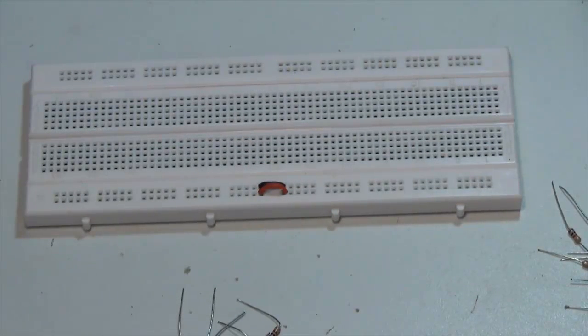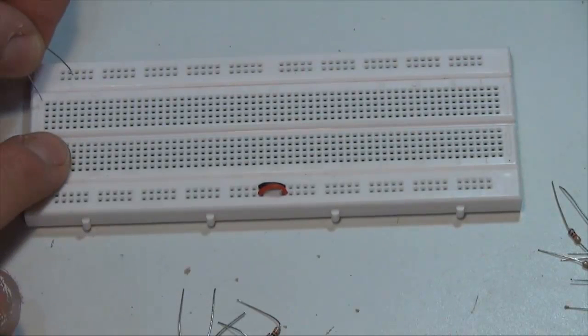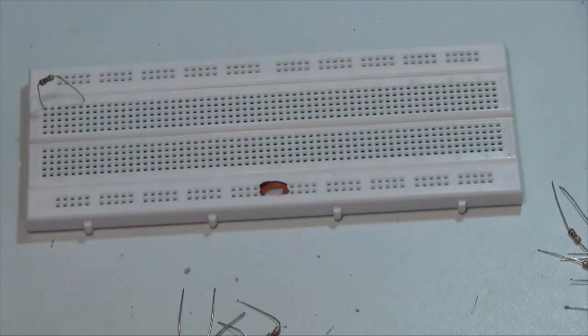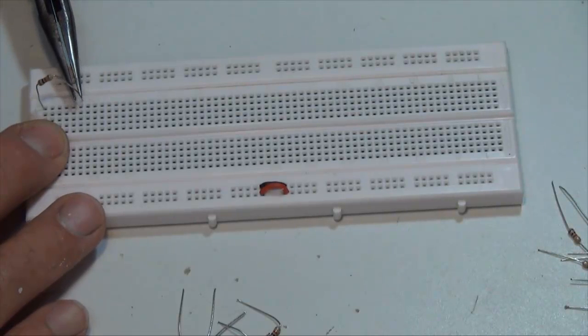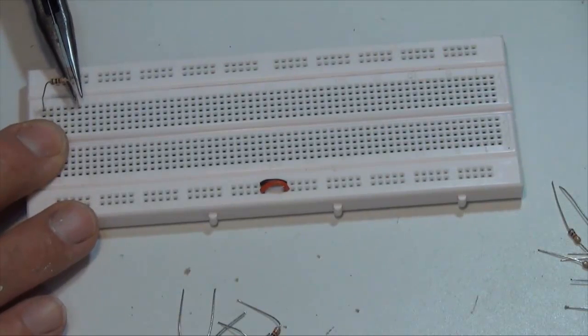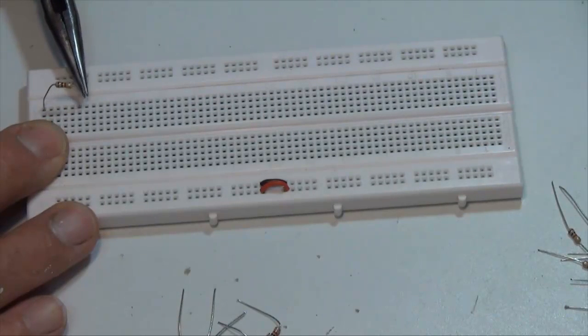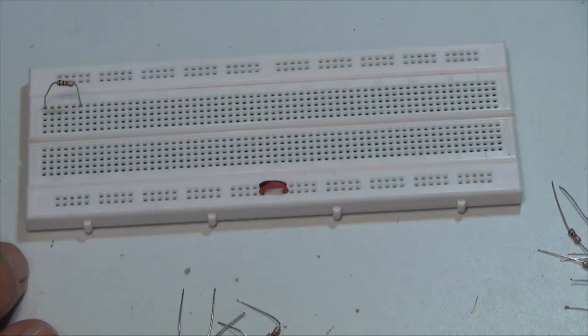Now to connect a part into the project board, you just slide the lead into one of the square holes. And if necessary, use a pair of needle nose pliers to push in the leads like this.